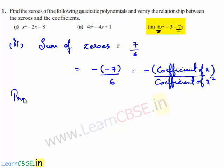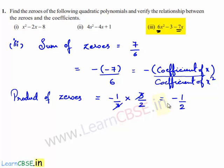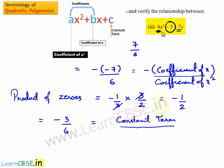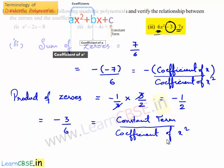The product of zeros is equal to minus 1/3 multiplied by 3/2. The 3s cancel and we get the product of the zeros as minus 1/2. Now, minus 1/2 can be written as minus 3 divided by 6. Here, minus 3 is the constant term and 6 is the coefficient of x². So the relation is: product of the zeros equals constant term divided by coefficient of x².